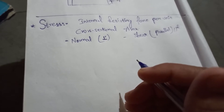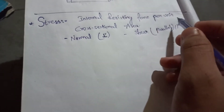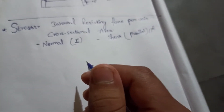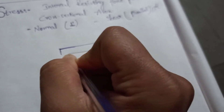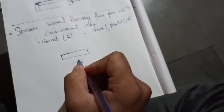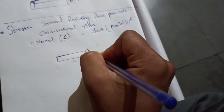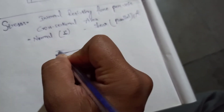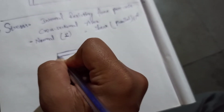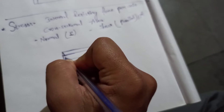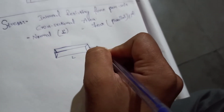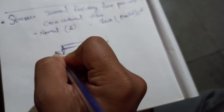The basic concept we need to learn first is stress. What is stress? Stress is nothing but internal resisting force per unit cross-sectional area. I will explain this concept with a clear example. Let's take a rod of length L, and its cross-sectional area is given as A.